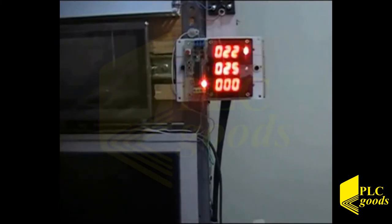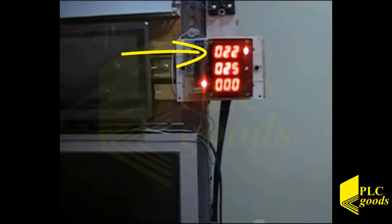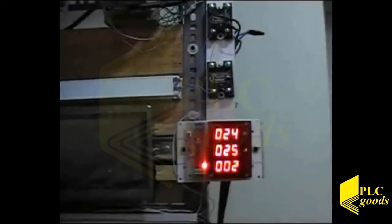Now let's start the process. In the beginning, PV is 22 but SV is 25. SV is greater than PV, so SSR1 and red LED indicator turns on to heat the water.